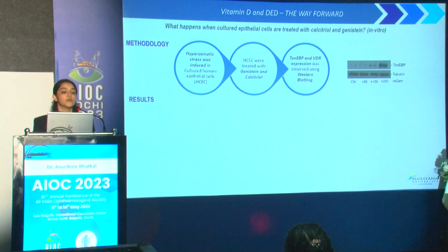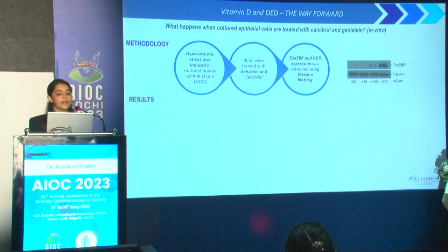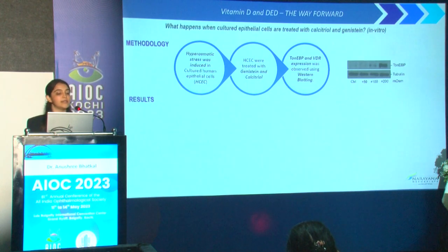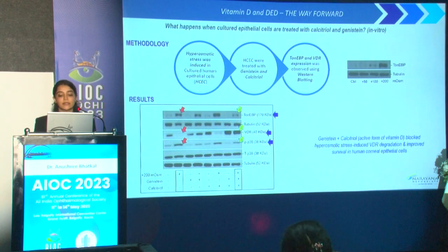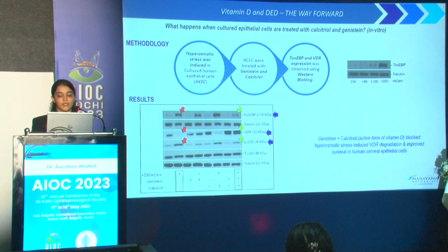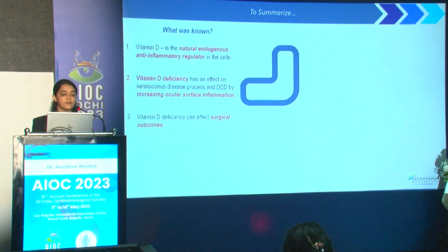In some recent work on dry eye disease, we induced hyperosmotic stress in cultured epithelial cells and treated them with genistein and calcitriol, looking at TonEBP and vitamin D receptor expression using western blotting. Genistein is a CFTR activator that regulates chloride transport inside the cells, helping to improve cell stability and maintain a good ocular surface milieu. We found that genistein and calcitriol blocked the hyperosmotic stress-induced vitamin D receptor degradation and improved the survival of vitamin D receptors in epithelial cells in this in vitro study.